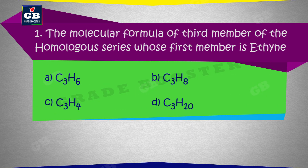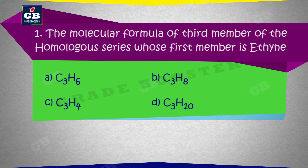The molecular formula of the third member of the homologous series whose first member is ethyne. Homologous series jis ka pehla member ethyne hai, us ki tisri member ke molecular formula hai: a) C3H6, b) C3H8, c) C3H4, d) C3H10.